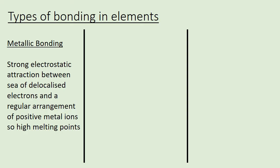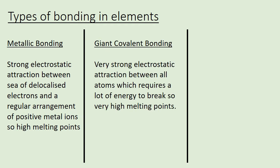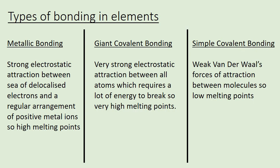That leaves the non-metals. Non-metals are going to be held together by covalent bonds — they are covalent molecules. However, there are two structures of covalent elements. They can either be a giant covalent structure — as seen in carbon — which is a very strong attraction between all atoms requiring a lot of energy to break, giving a very high melting point. Alternatively, it could be a simple covalent structure where molecules are only held together by weak van der Waals forces, and therefore have low melting points. Those three structures you also see in assessment objective one and a little bit in GCSE.